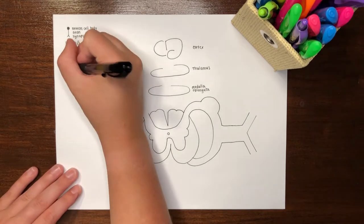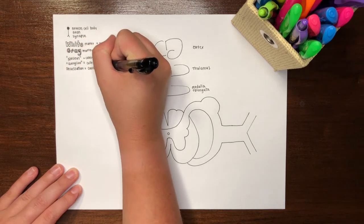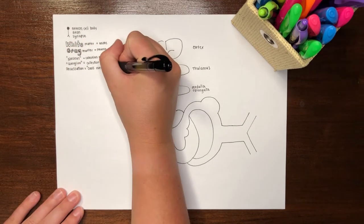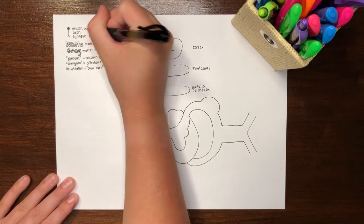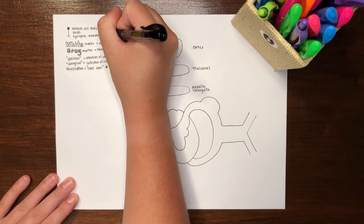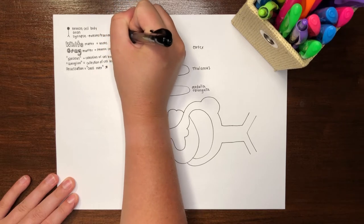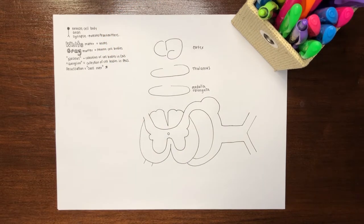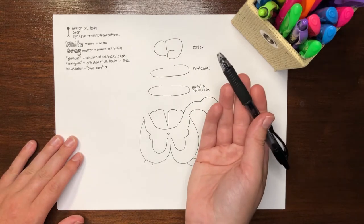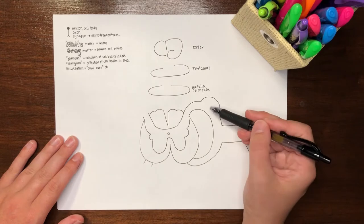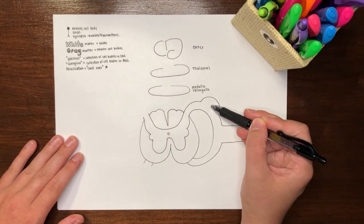A decusation is a term used to describe the crossing over of nerve fibers between right and left sides of the body. There are many different ways that neurons can interact with each other and other cells in the body. Simply speaking, a synapse is the interaction between a neuron and another cell through the release of small particles called neurotransmitters.